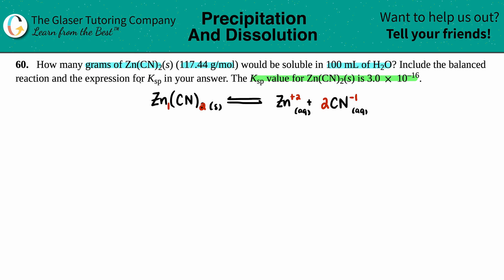Now we need to write the expression for Ksp. Remember, Ksp equals the products raised to their coefficients. In our case, Ksp equals Zn²⁺ times CN⁻ squared, since there's a 2 in front of the CN. The Ksp is 3.0 times 10 to the negative 16th.